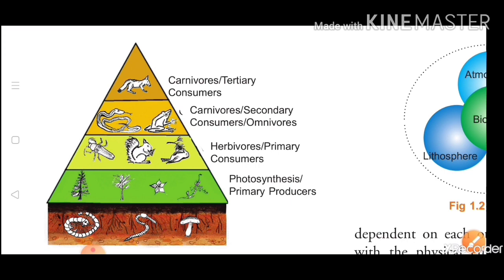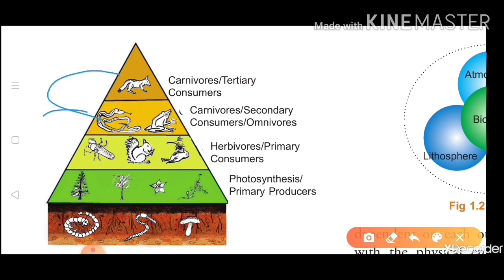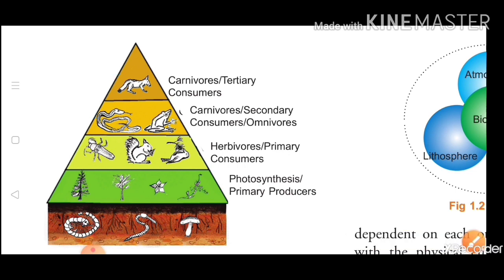Carnivores are the type of animals that depend only and only on flesh. They eat flesh and meat — they are never vegetarian. We call them tertiary consumers, or carnivores. So I hope you have understood how many types of consumers there are, what primary consumers are, and what primary producers are.